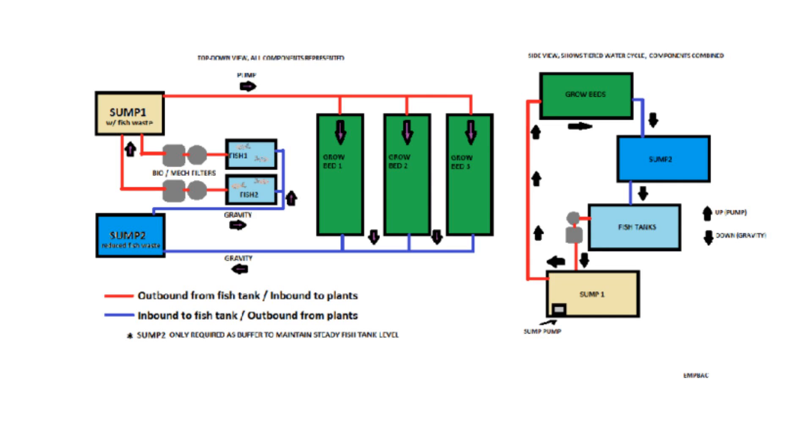So first we have the sump tank here with the fish waste. Matter of fact, we'll start at the fish tank. We have the fish tank here. They're going to come out and they're going to connect to these mechanical filters and then biological filters. Come down to sump number one, which is going to have fish waste here it says, and it's going to get pumped over to these grow beds.